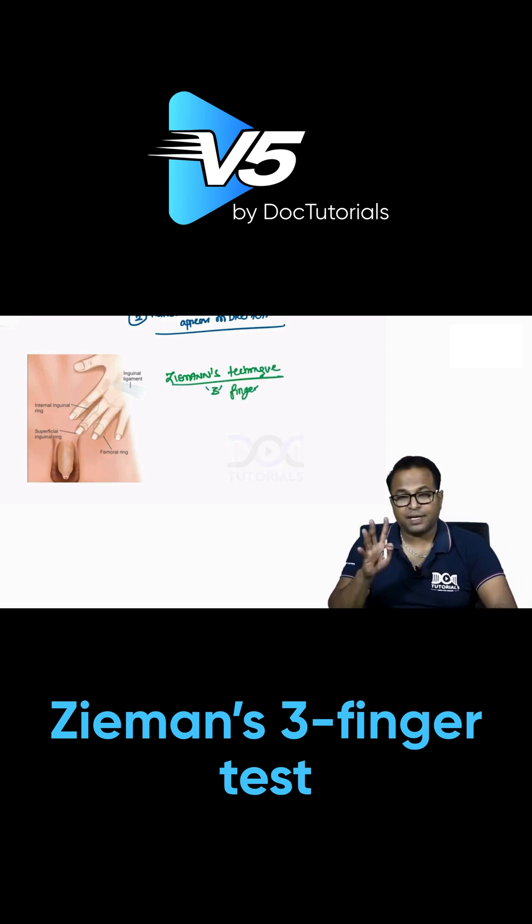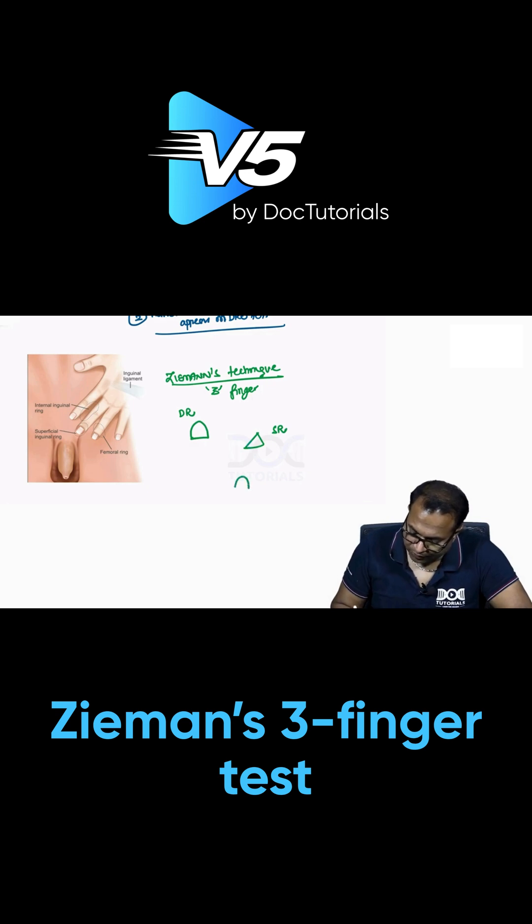You have to keep three fingers: one finger is kept on the deep ring, another finger on the superficial ring, and another finger on the saphenous opening. Keep the three fingers in these three openings and ask the patient to cough.